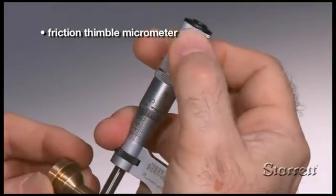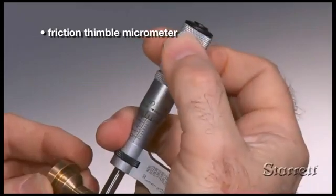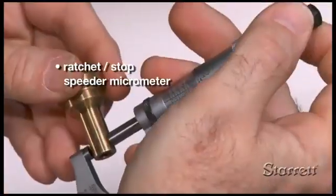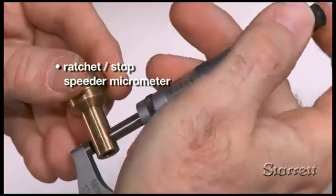Reliable repeatability depends on applying uniform pressure from one measurement to the next. Micrometers have either friction thimble or ratchet stop speeder to help ensure uniform pressure.